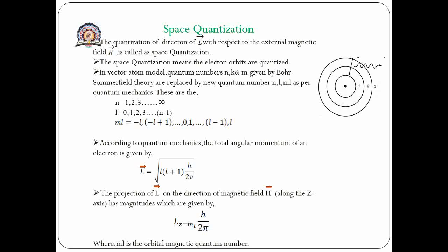In the Vector Atom Model, quantum numbers n, k, and m given by Bohr-Sommerfield theory are replaced by new quantum numbers n, l, and ml as per quantum mechanics. Here n is the principal quantum number with values 1, 2, 3 up to infinity; l is the orbital quantum number with values 0, 1, 2, 3 up to n minus 1; and ml is the orbital magnetic quantum number with values from minus l to plus l.